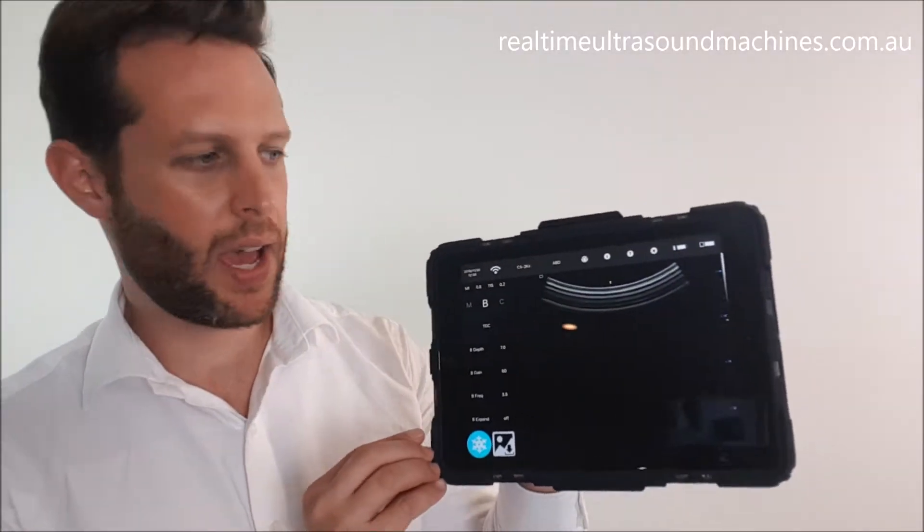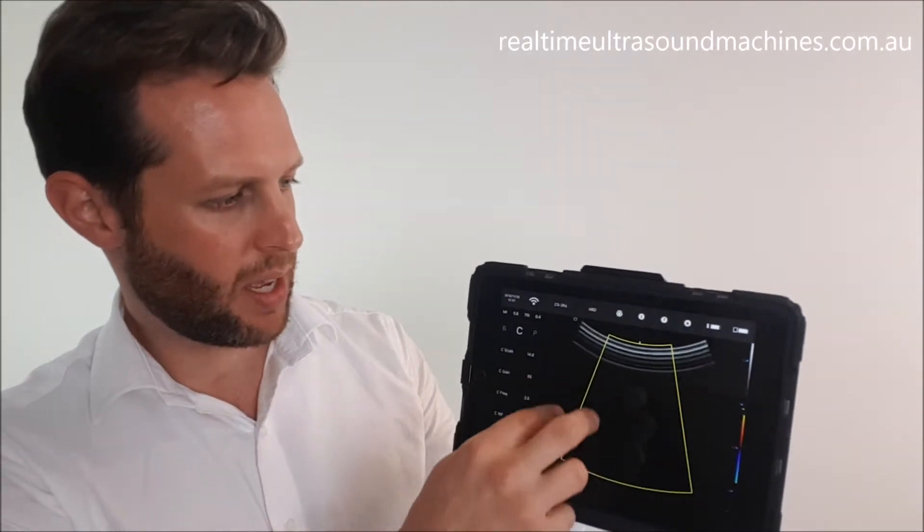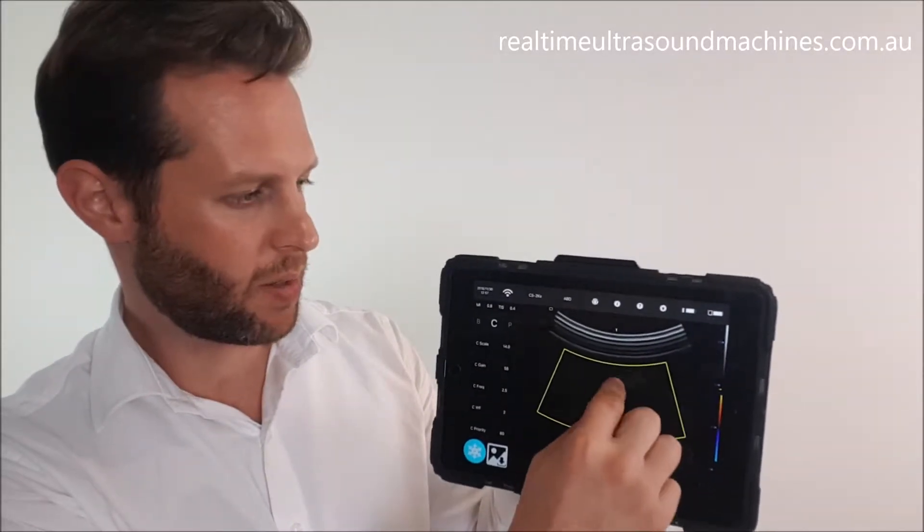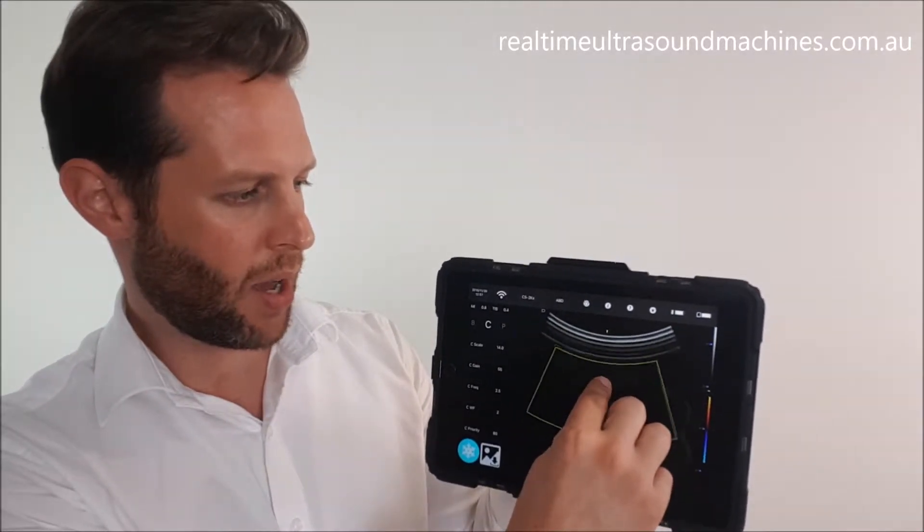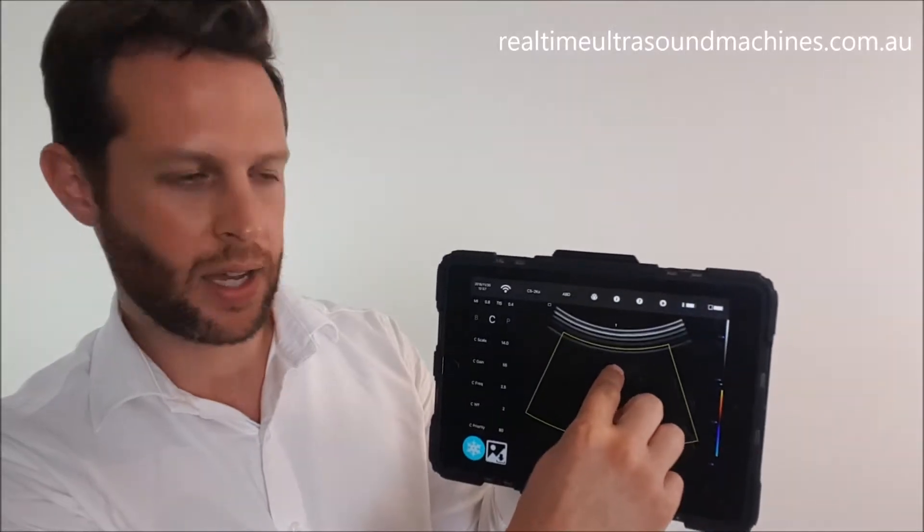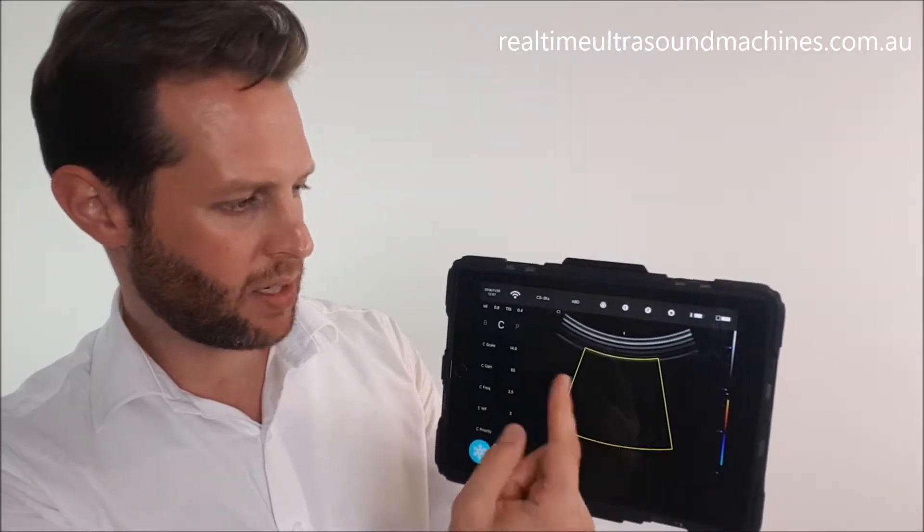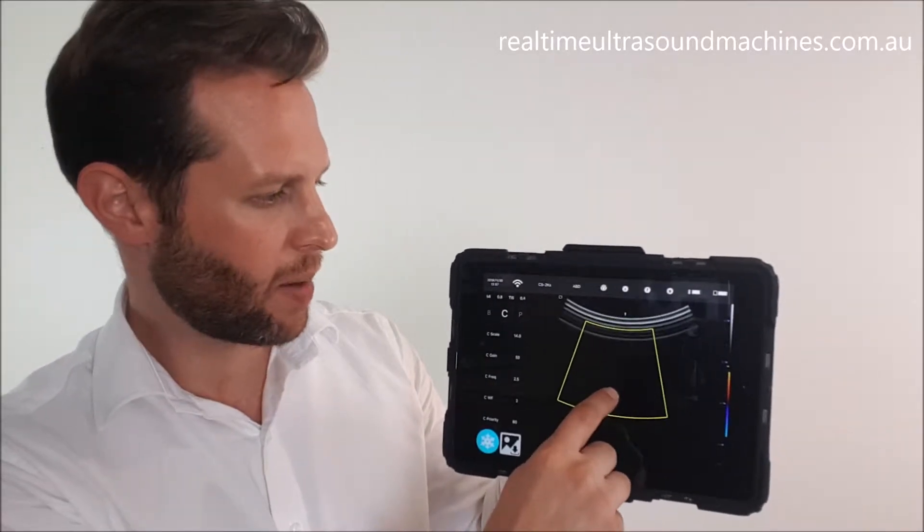If your unit has Color Doppler mode, you can access it by sliding across to the C. When you hit that, you'll bring up a little sampling box which will sample the color region. You can adjust the box by using your fingers to pinch and increase the depth or width, and using one finger you can change the position of that sampling box. You've also got Power Doppler (the P) and Pulse Wave Doppler.